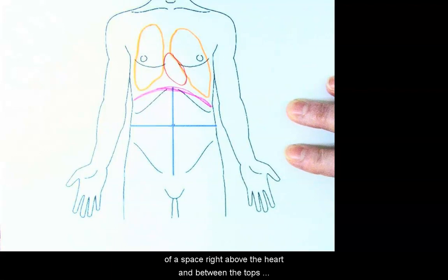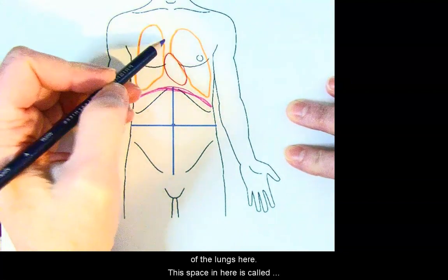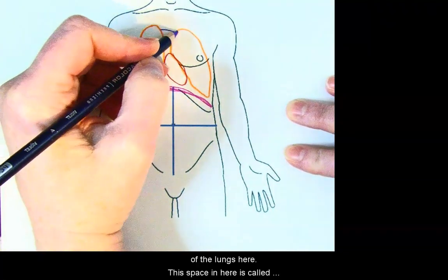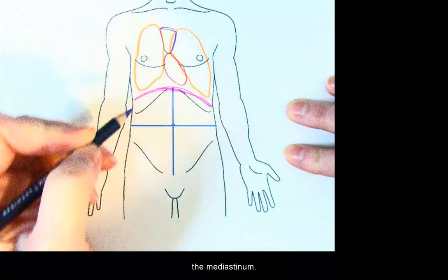Now you'll notice there's a bit of a space right above the heart and between the tops of the lungs here. This space in here is called the mediastinum.